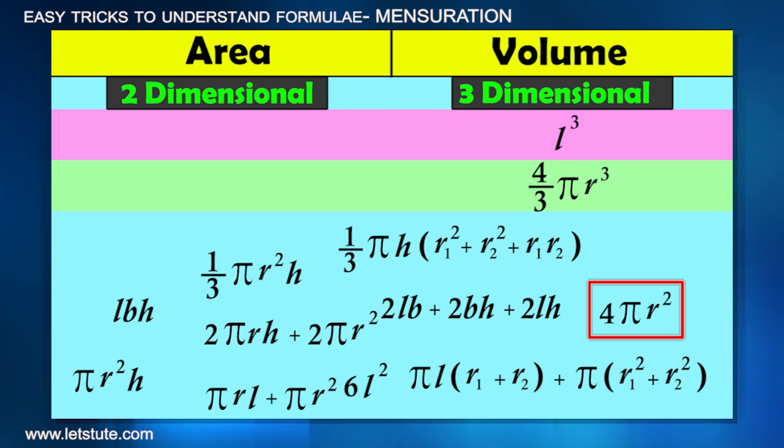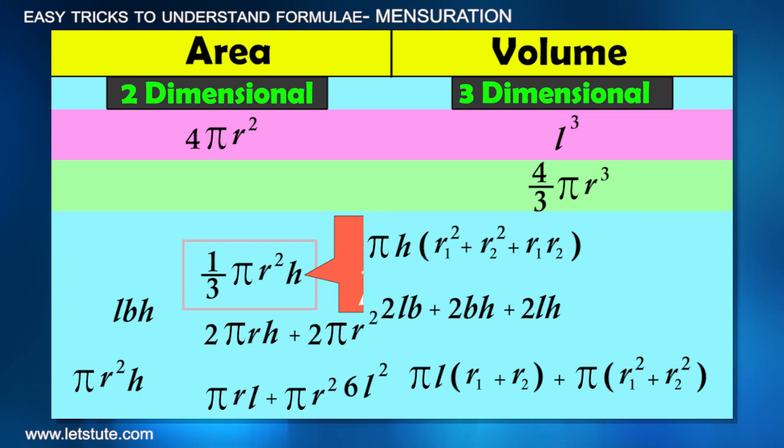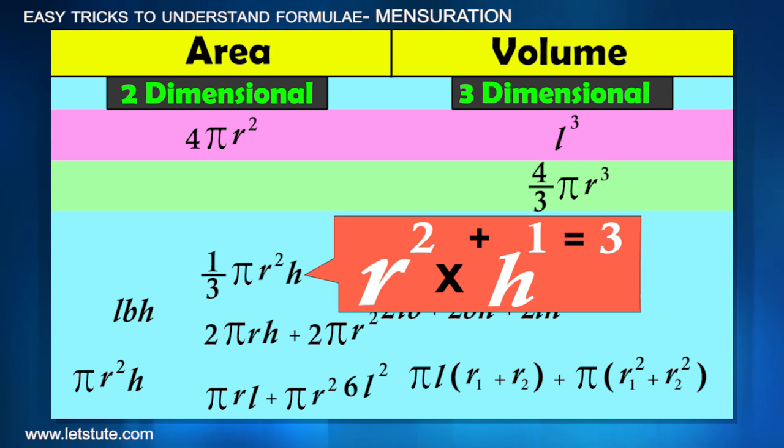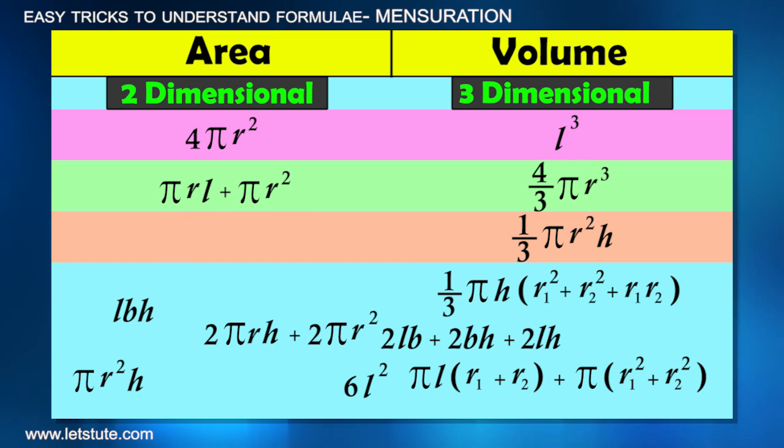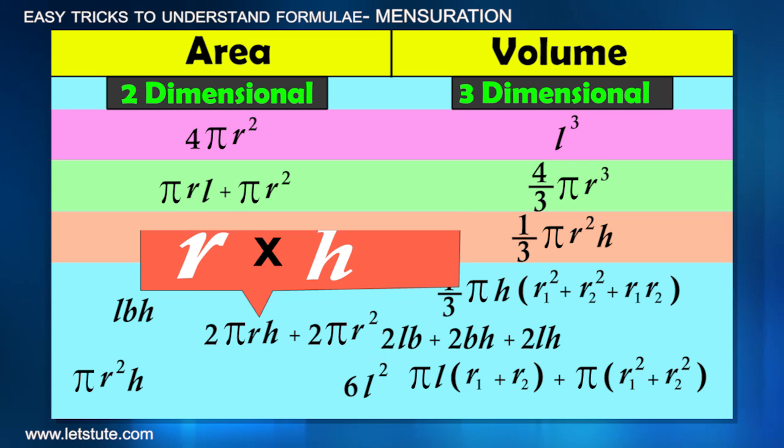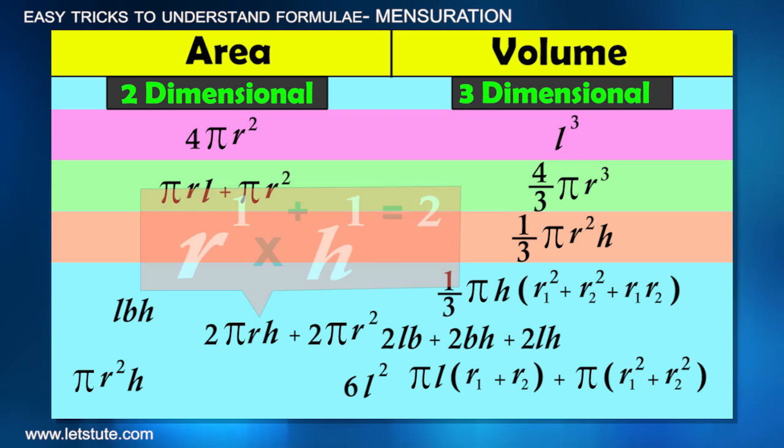4π r² is the formulae to calculate area, and then 1/3 π r² h, r² and h, so the addition comes up to 3. π r L is the formulae to calculate surface area, then 2π r h, again r has power 1, h has power 1, it adds up to 2, and so on.